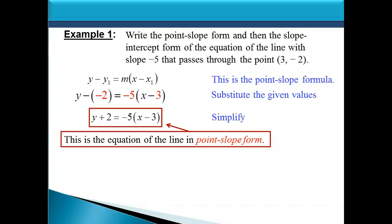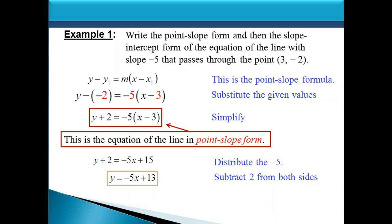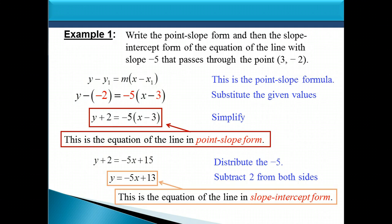Now we need to find the slope-intercept form, which is y equals mx plus b. Starting with the point-slope form we have, we isolate the y. We distribute the negative 5: negative 5 times x is negative 5x, and negative 5 times negative 3 is positive 15. Then we subtract 2 from both sides to finish isolating the y, giving us y equals negative 5x plus 13 — the equation of the line in slope-intercept form.